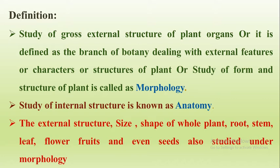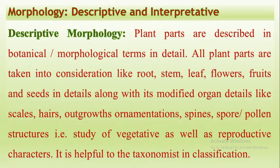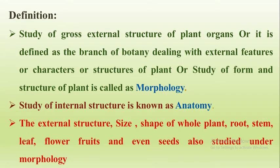The external structures include the size and shape of the whole plant, like root, stem, leaf, flower, fruits, and even seeds, which are also studied under morphology. So there are different shapes and sizes of different types of root, stem, leaf, and flower — we will discuss in detail.